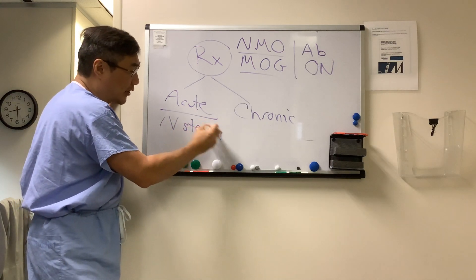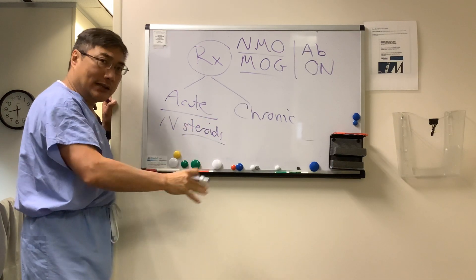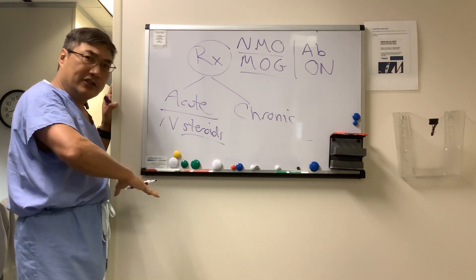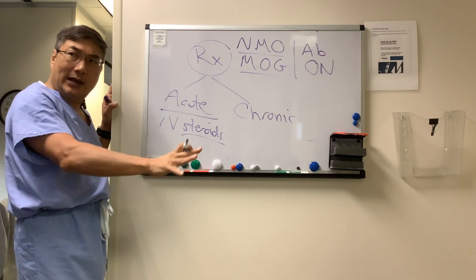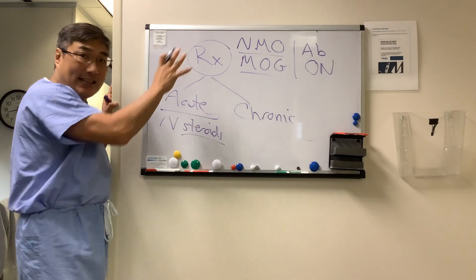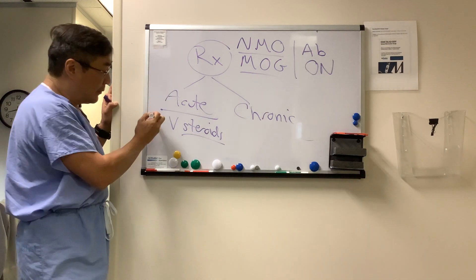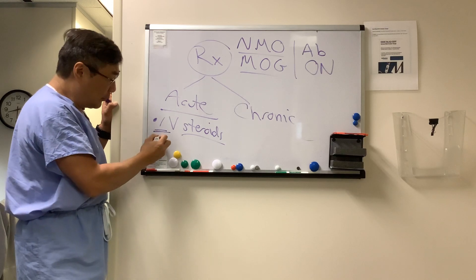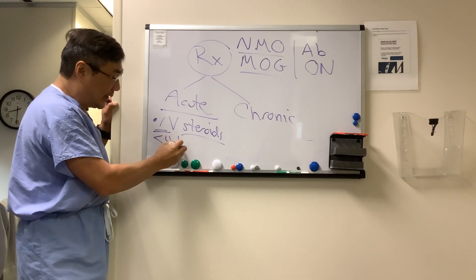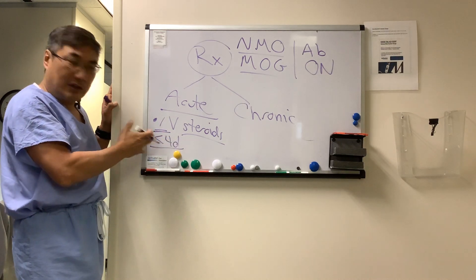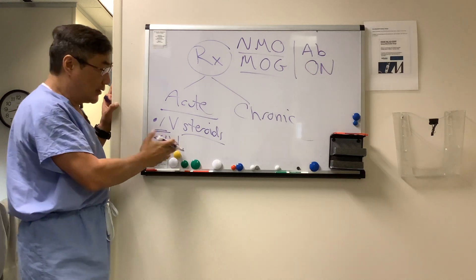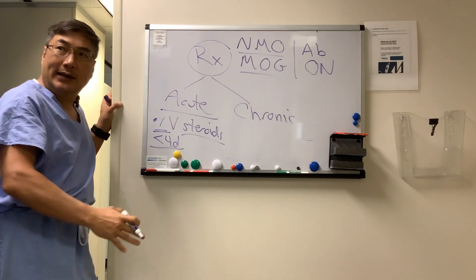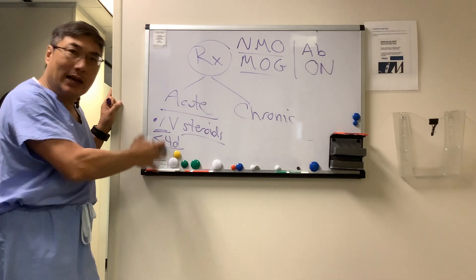In the optic neuritis treatment trial, optic neuritis from idiopathic or multiple sclerosis — whether you gave IV steroids, oral steroids, or nothing — everybody got better. But that's not the case in NMO and MOG. In NMO and MOG, you have to treat with IV steroids, and we'd like to get the patient treated within the first four to seven days of onset, because time is brain, and brain is optic nerve, and time is vision.